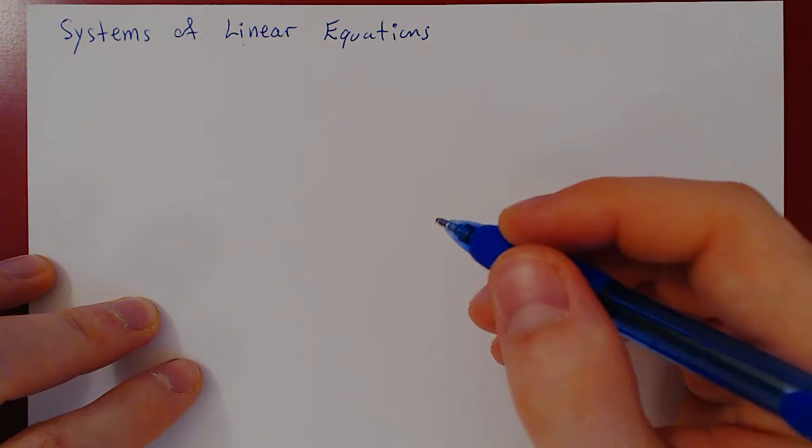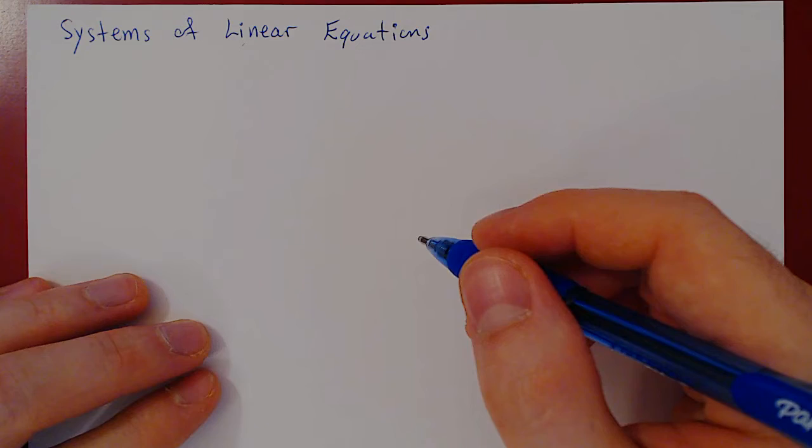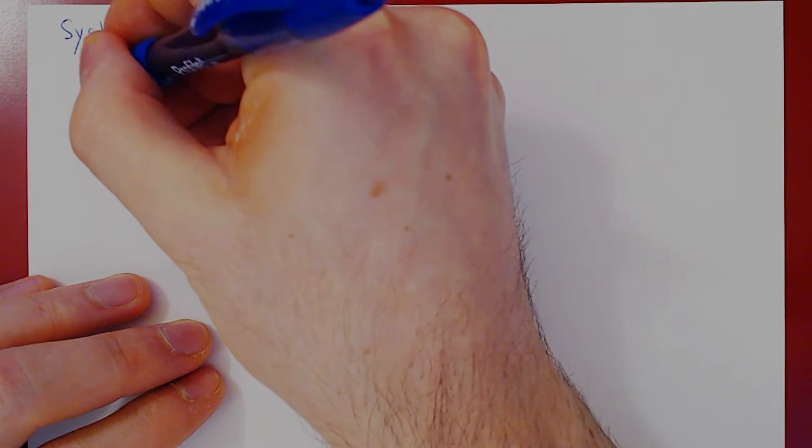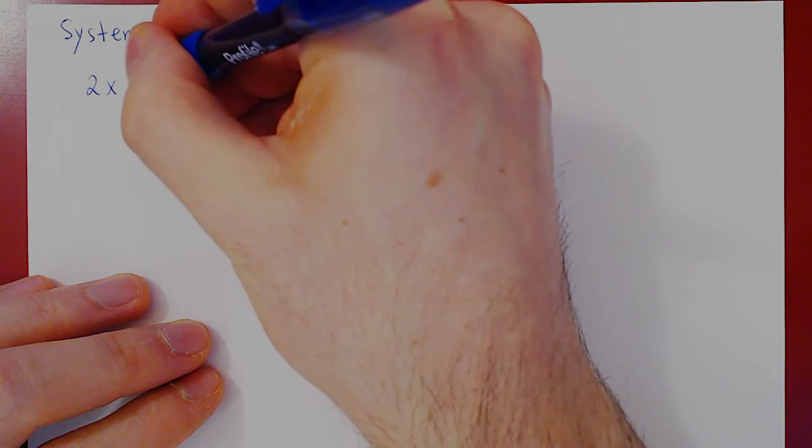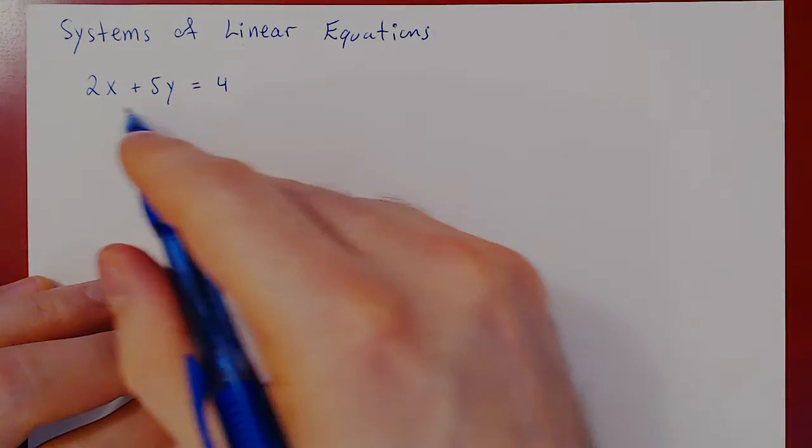Consider first a very simple example with two variables, x and y, and two equations. So suppose we're asked to solve this equation, so 2x plus 5y equals 4, but not just this equation alone.